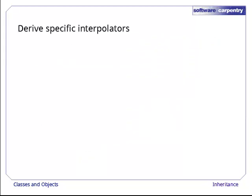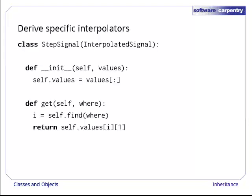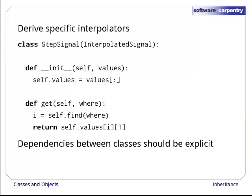Now that we have a way to find where we're supposed to interpolate, let's rewrite our actual interpolating classes. Here's the new version of step signal. It's derived from interpolated signal. Again, that's what it means to put interpolated signal's name in parentheses in the class definition, which means it can use the find method without redefining it. In order for that to work, though, step signal's constructor has to create self.values, so it will be there when self.find needs it. This is fragile. There's nothing in step signal to tell the next person reading this code why we're doing this, just as there was nothing in interpolated signal to tell someone reading it where self.values came from.